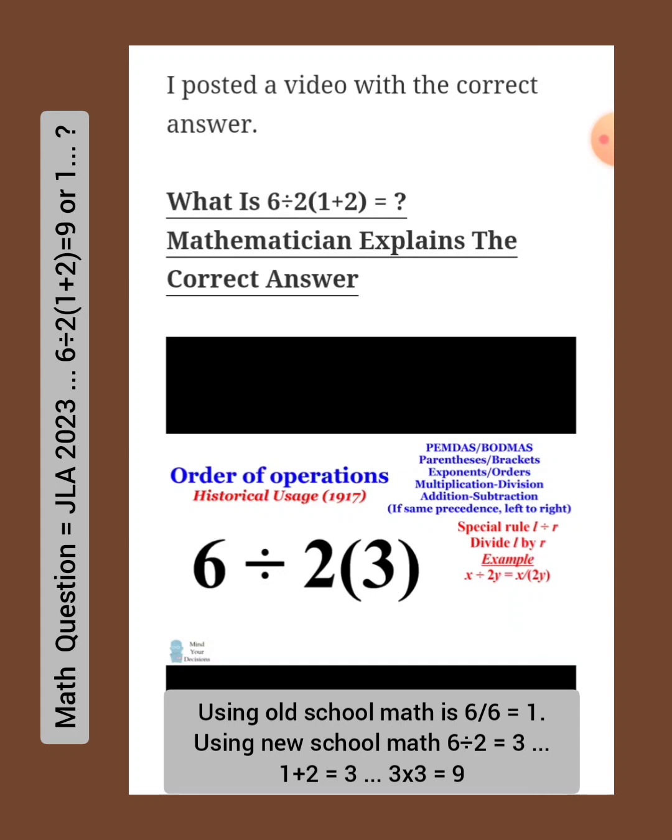So under this historical usage, which is a special exception to the order of operations, and we don't use it anymore, you would want to take this product on the right as your divisor. So applying this rule would then lead to the expression 6 over 2 multiplied by 3. We will now convert the multiplication in the denominator so that 2 times 3 is equal to 6, and we now have one division, which is 6 divided by 6, and that's equal to 1.